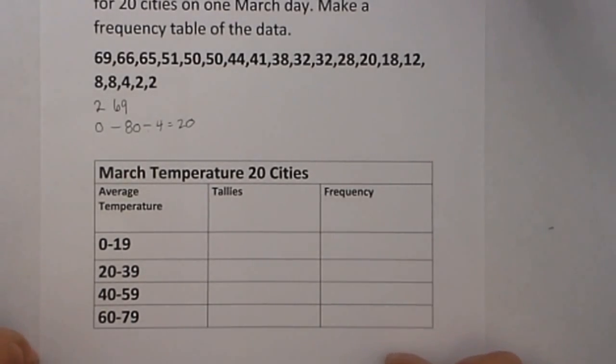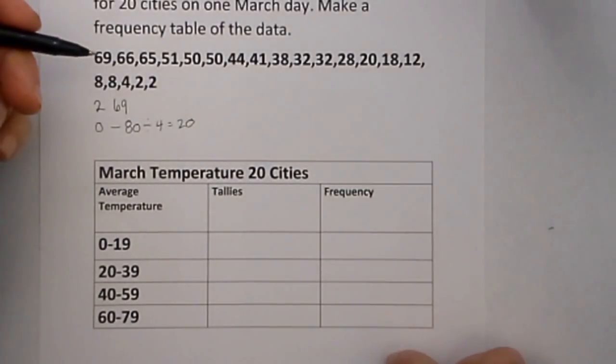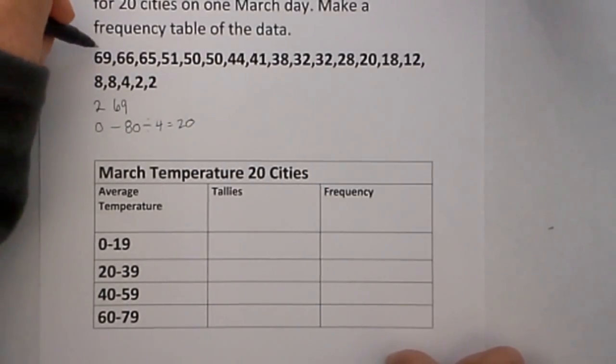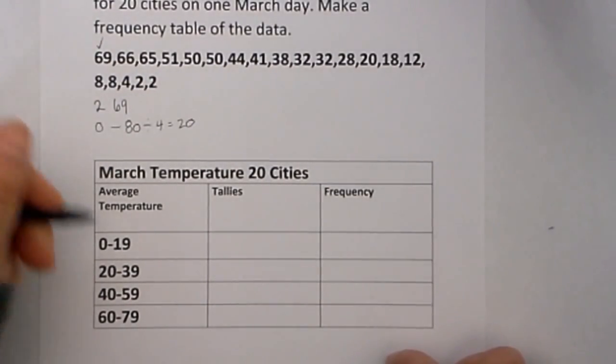I next just start doing tallies and the easiest thing to do with a frequency table is just to make mistakes and leave out numbers. So to help prevent this do a check and then a tally.